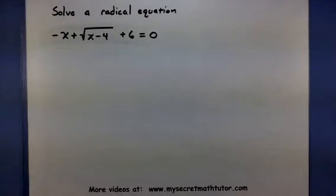Welcome to My Secret Math Tutor. We're going to take a look at solving a radical equation. So this is basically an equation with a radical sign in it. Think a square root, a third root, fourth root, something like that.